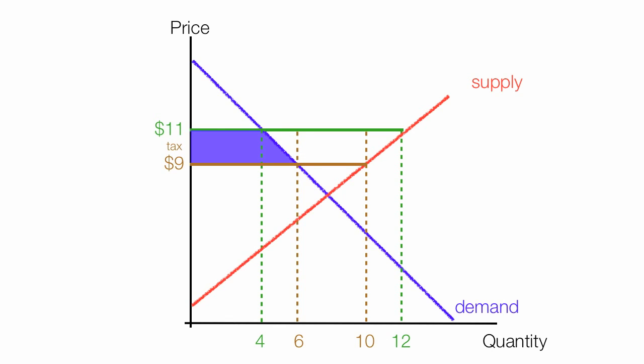So the rectangle, the base is 4, the height is 2, and the 4 is the quantity. 4 times 2 is $8, so the total area is $8.